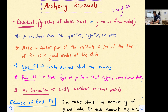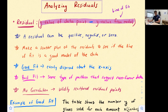A residual is the y-value of the data point minus the y-value from the model — meaning from the line of best fit. We get an equation for our line of best fit, plug in our x-values and solve for y, and that gives us the y-value from our model. Then we have the y-value from the data point, which comes from our scatterplot.